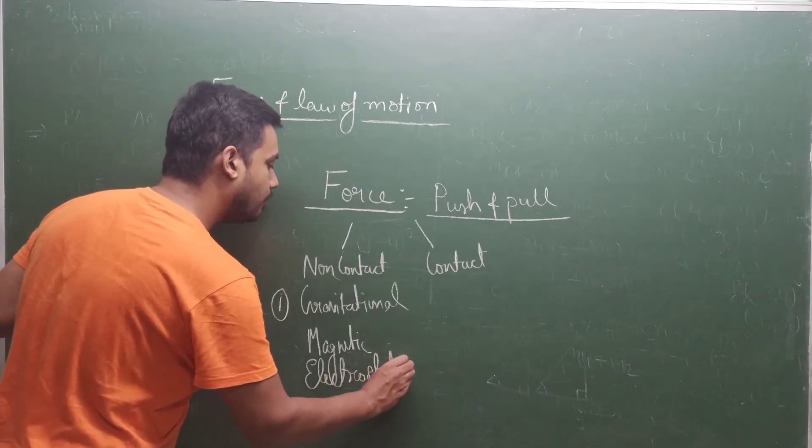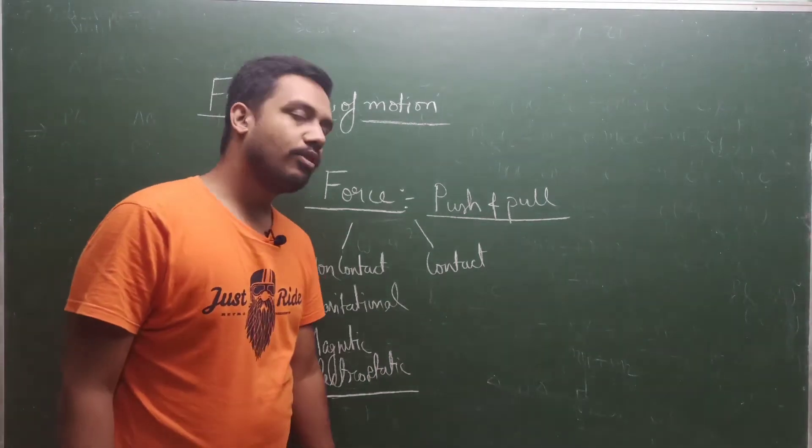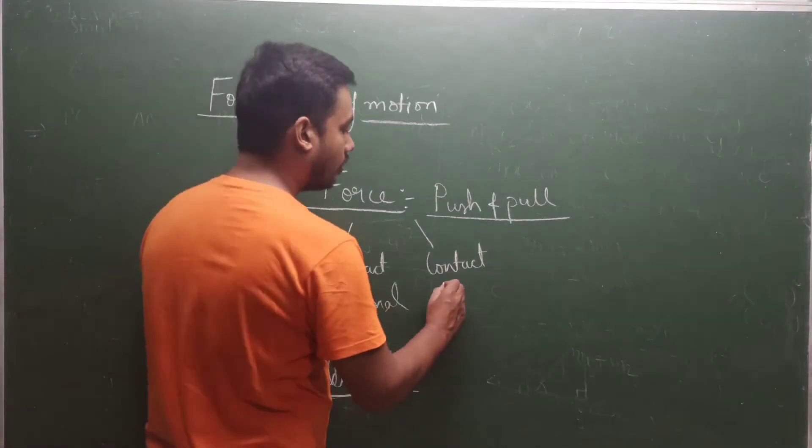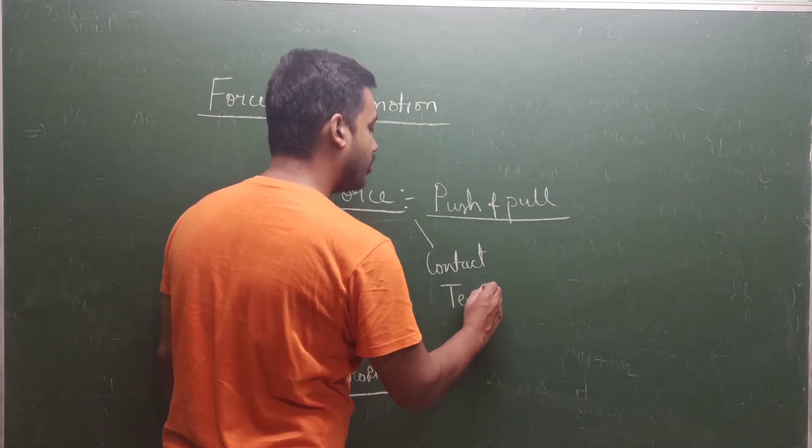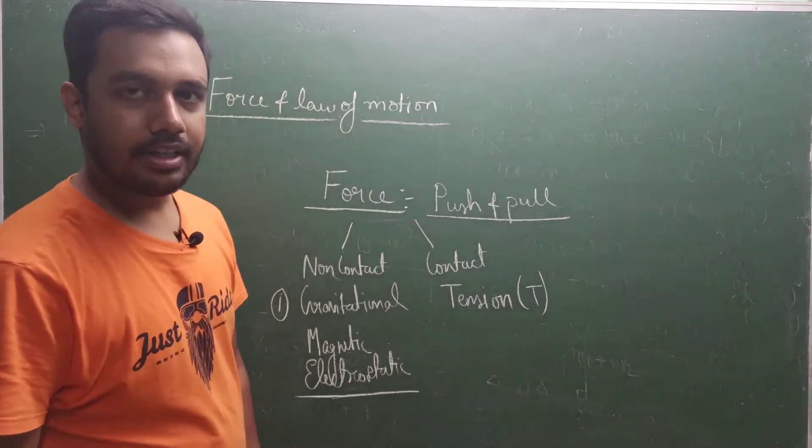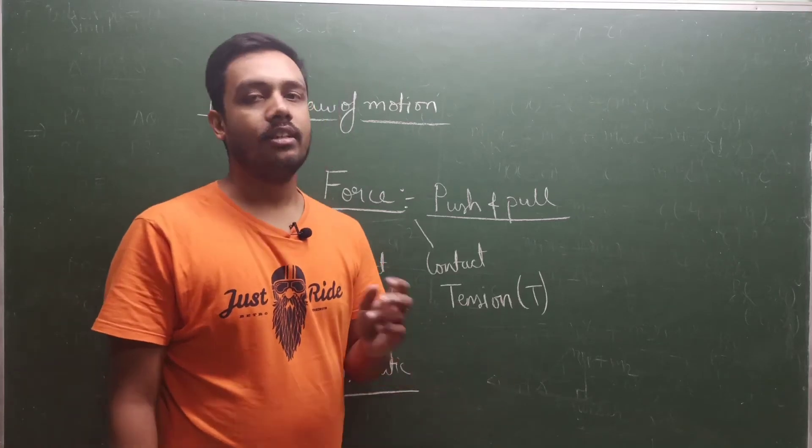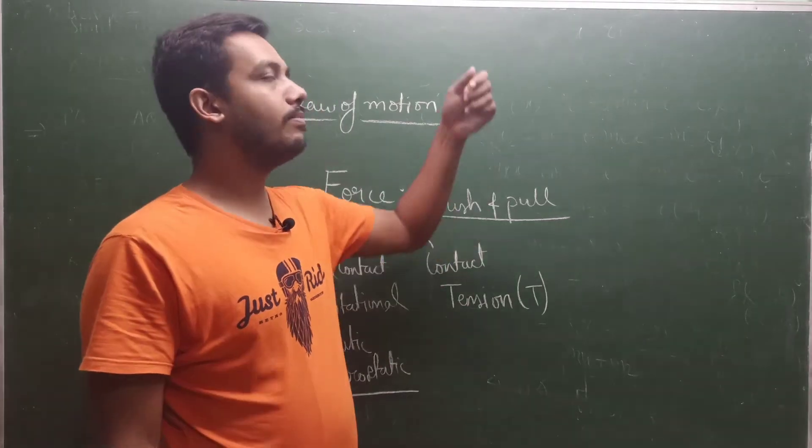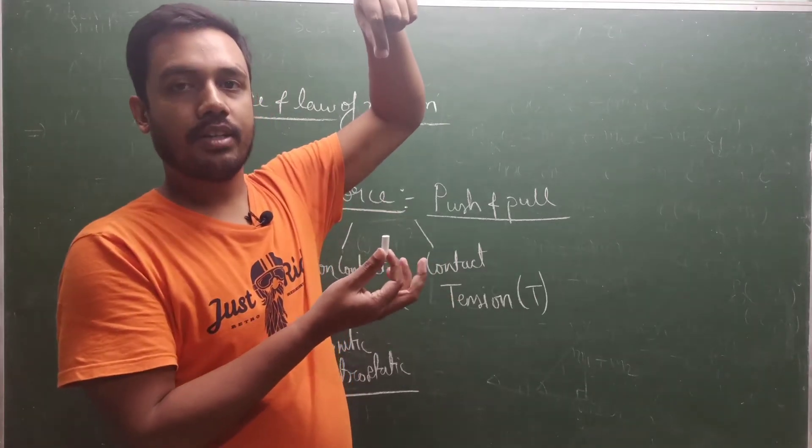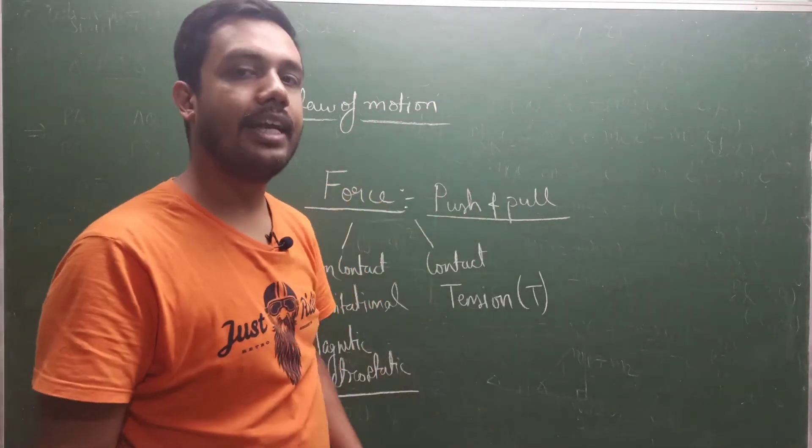Electrostatic means the force between charged particles. These are examples of non-contact forces. Now we will talk about contact forces. Contact force example: tension, denoted by capital T. When you pull or stretch, that force is the tension. Suppose I am hanging this chalk using a string, so the force that is experienced by the string is called tension.